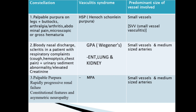Look at the second scenario: bloody nasal discharge, scleritis in a patient with respiratory complaints, plus urinary sediment abnormality, elevated creatinine, and respiratory complaints — cough, hemoptysis, and chest pain. Obviously GPA (Granulomatosis with Polyangiitis / Wegener's) is very much in mind. You can have ENT, lung, and kidney — three organs involved. Remember it is not always that all three will be involved; sometimes you may have only ENT and lung, or only lung and kidney.